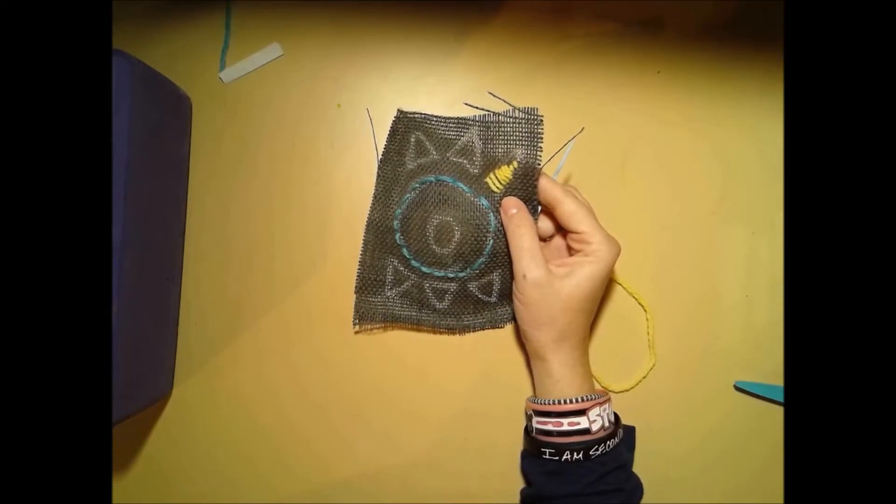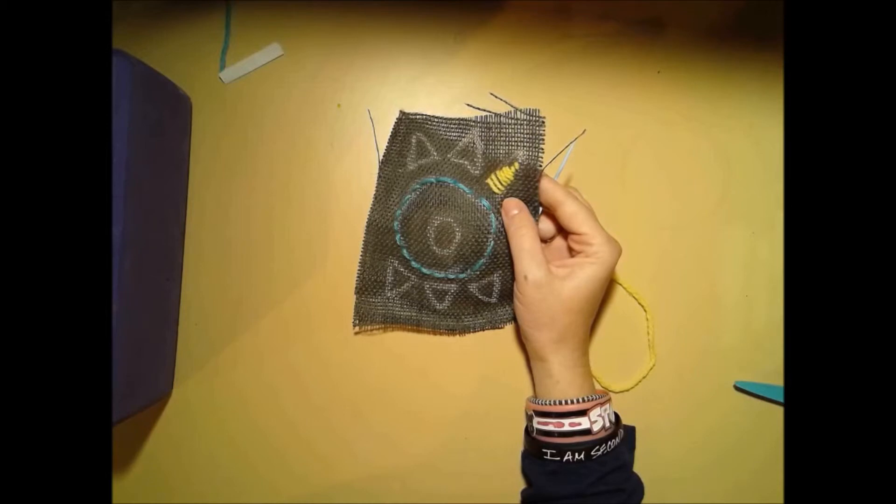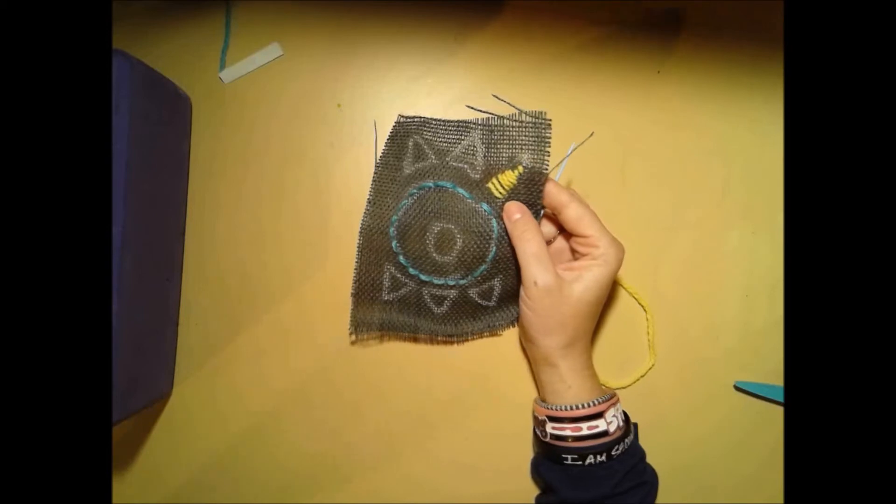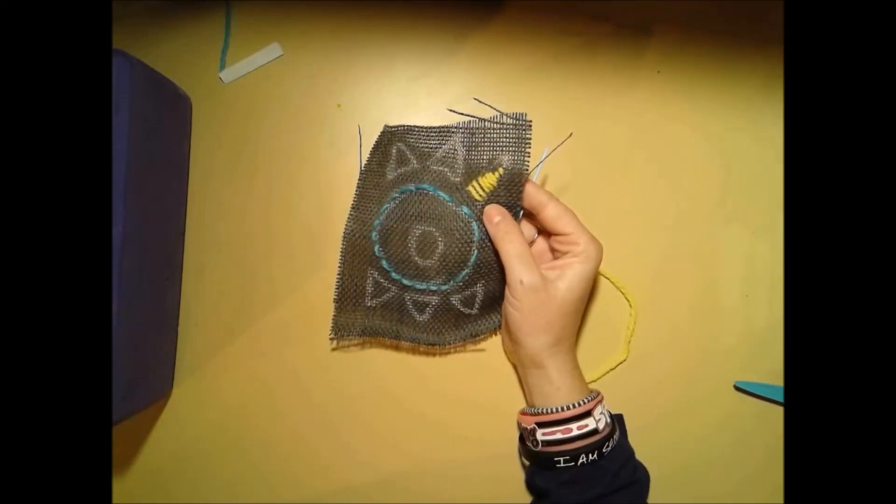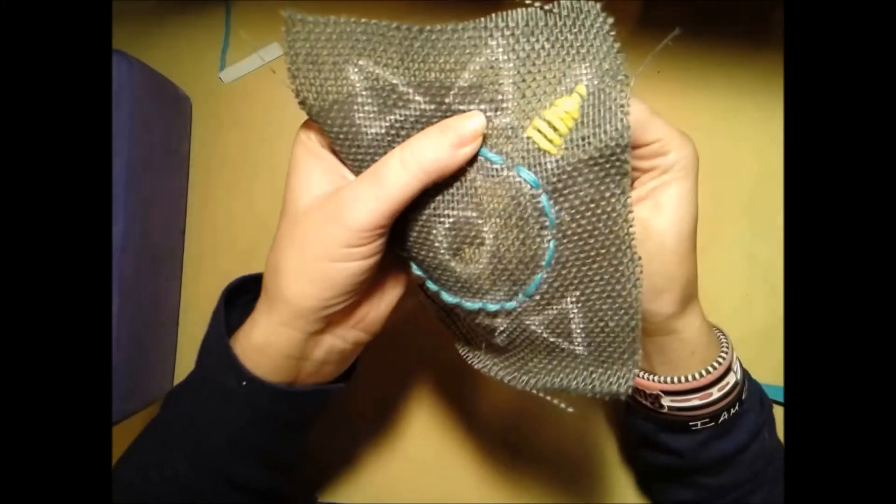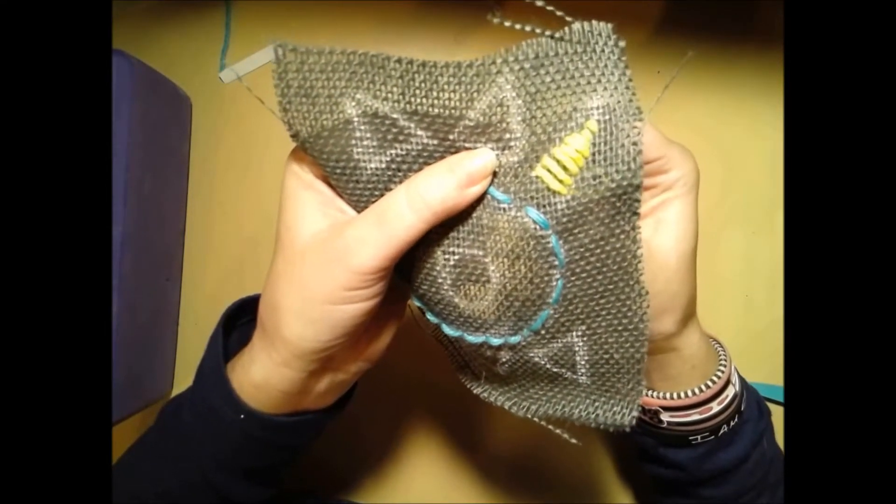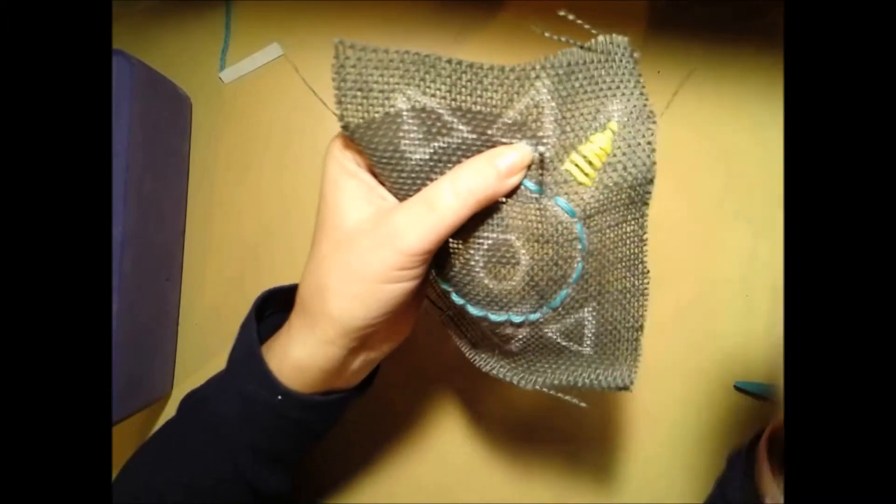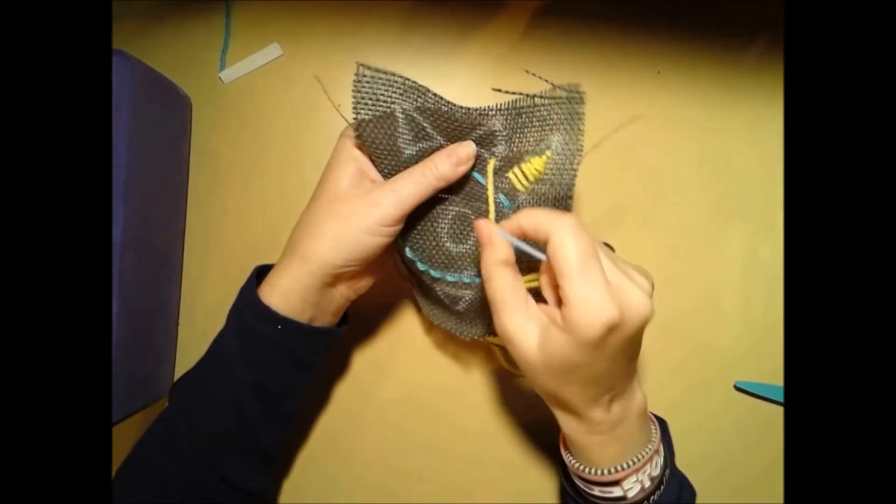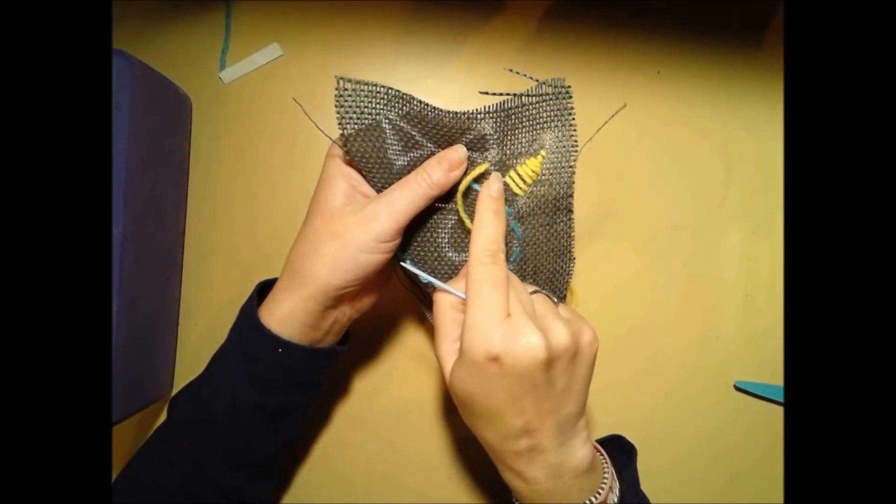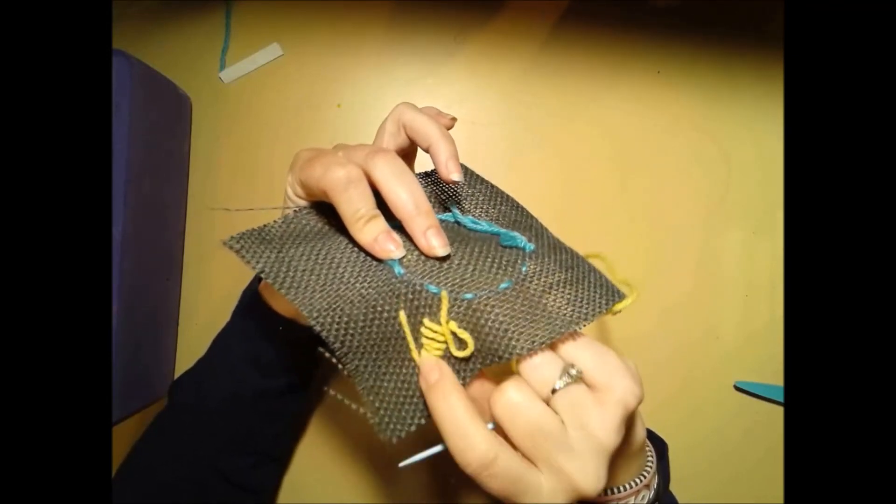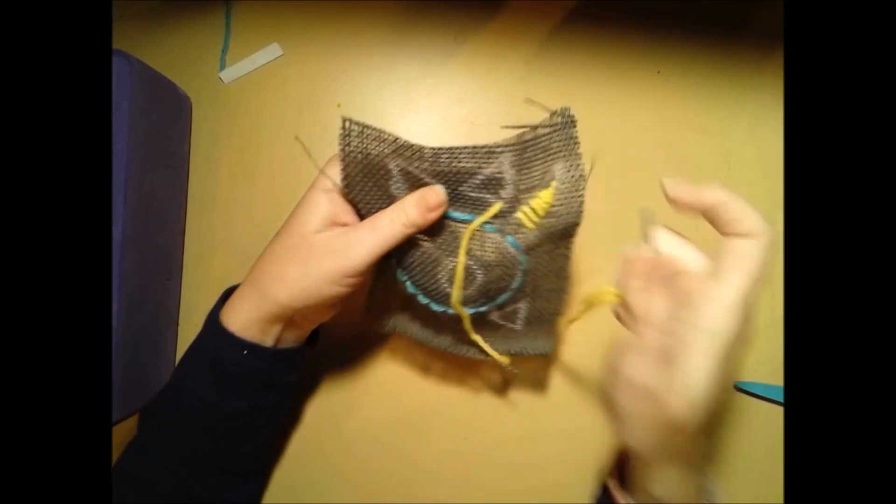Now if I want to go to the next shape, I need to make sure that my needle is on the back, which it is. And then I'm just going to start on this next shape right here. So I'm just going to look for my needle again and pull it through. You want to make sure you do that on the back because now I can't see that yarn going across. If I did it in the front, I would have that yarn going across the front and I don't want that.